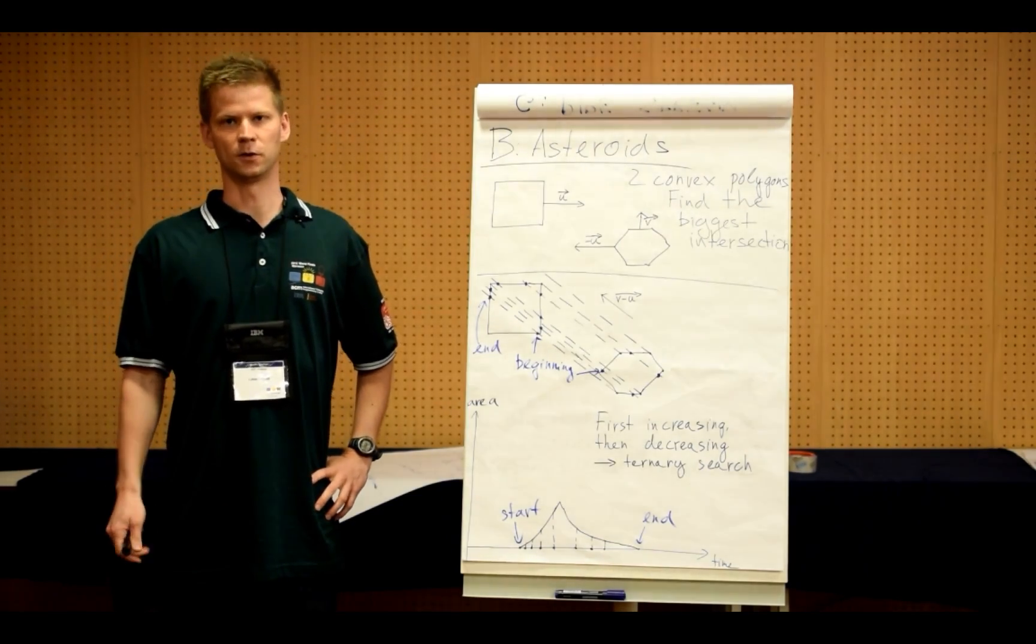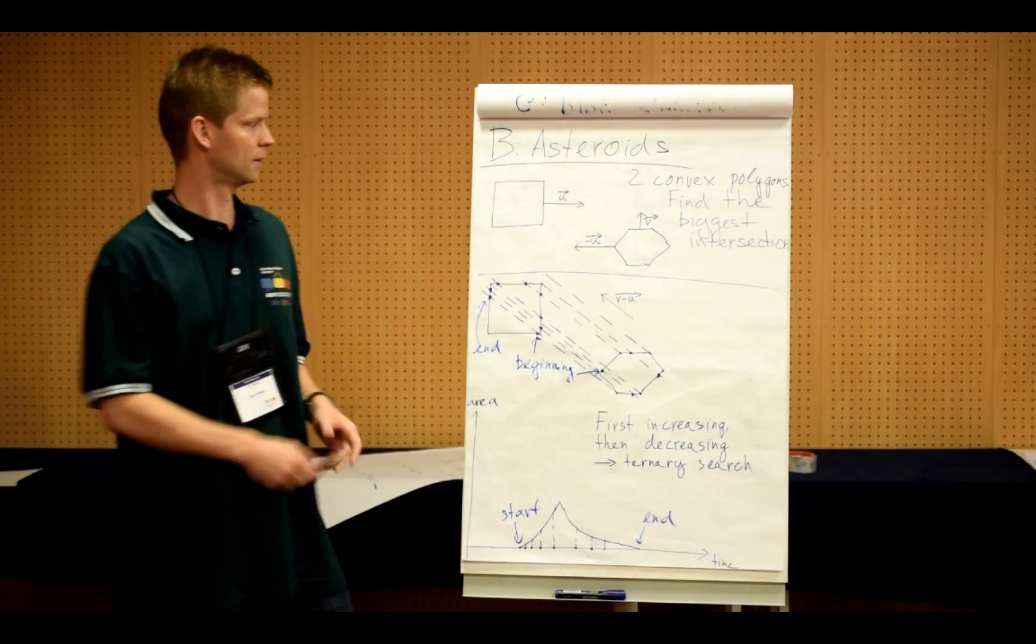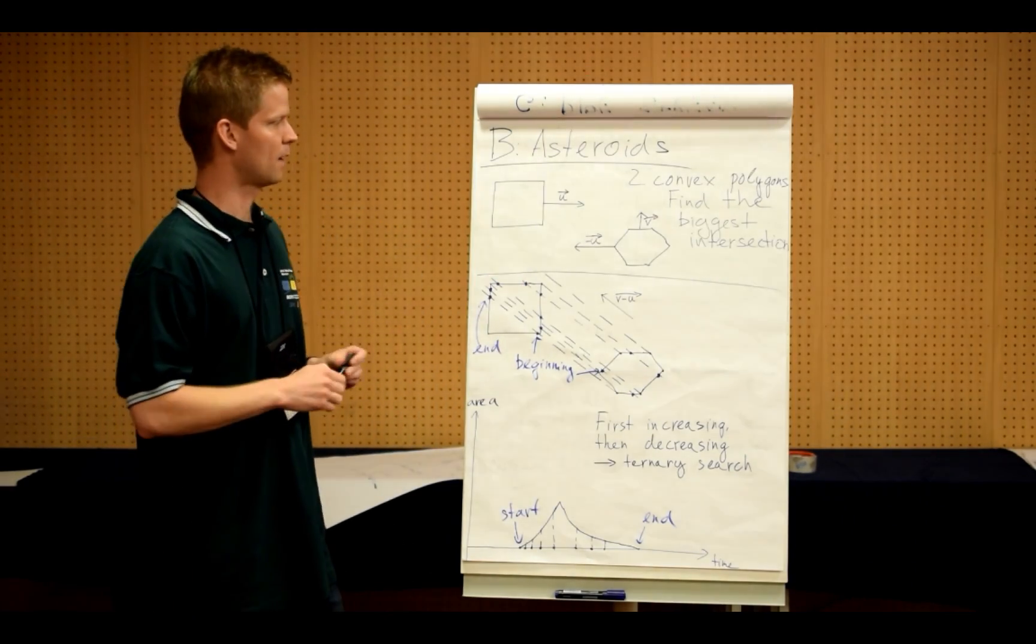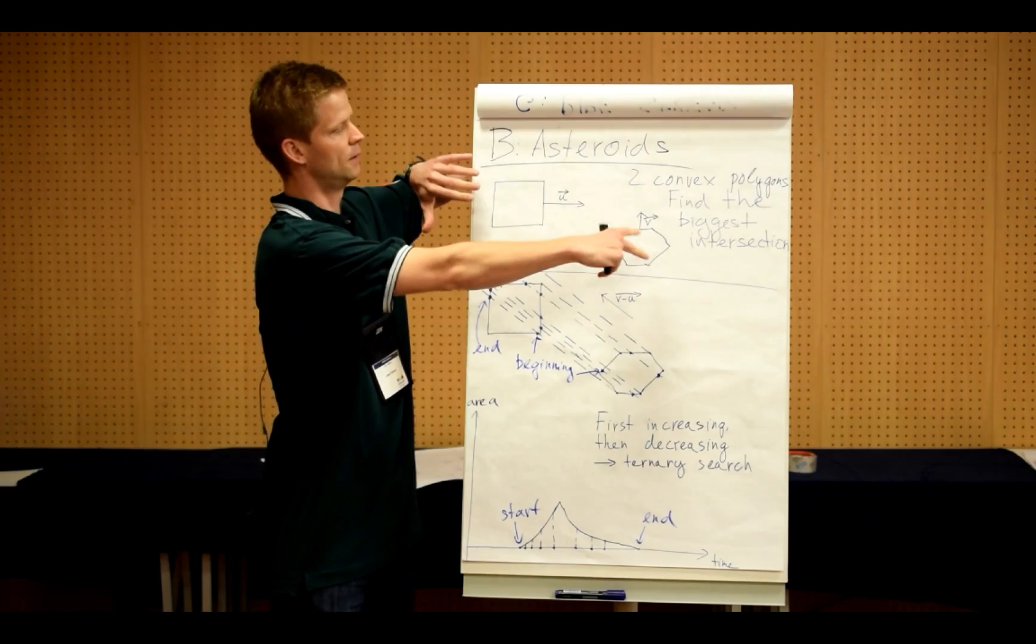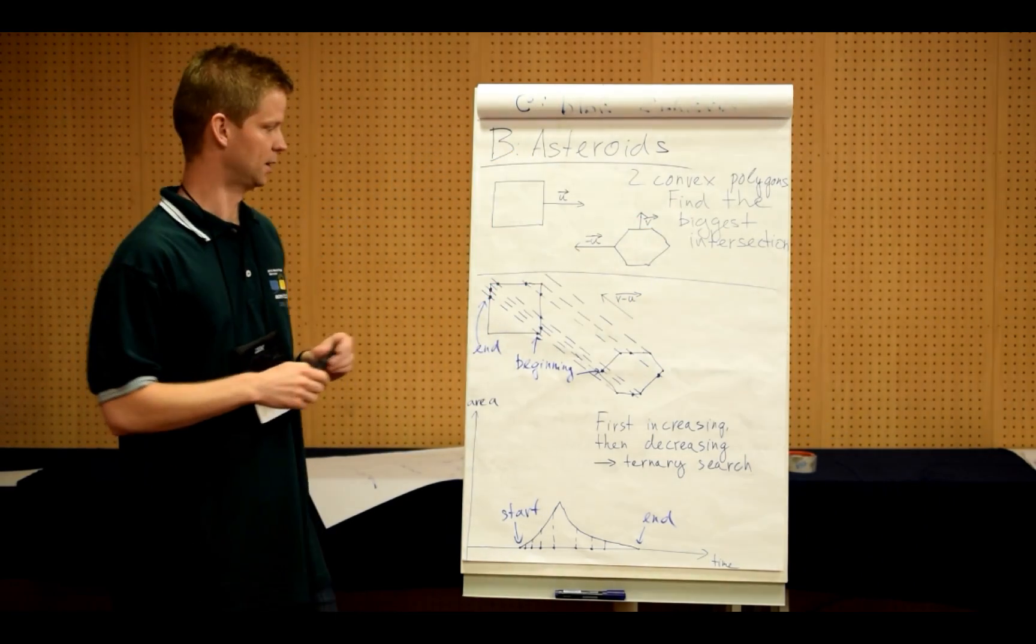Hello, my name is Lukáš Pláček and I'm going to explain problem B called asteroids. In this task we are given two polygons which move at constant speed. Our task is to find the biggest intersection. When they're going to move they're going to intersect and we need to find the biggest intersection.